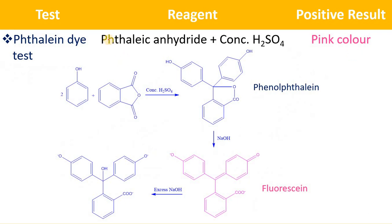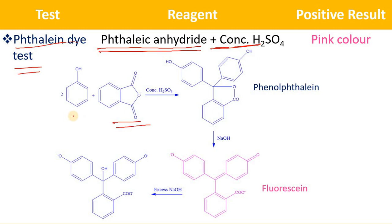You can also identify phenol by using the thaline dye test. The reagent is phthalic anhydride, which is an anhydride of phthalic acid, along with concentrated H2SO4. In this test, 1 mole of phthalic anhydride reacts with 2 moles of phenol. At the para position, hydrogen is eliminated in the form of water — one hydrogen from the first phenol and one from the second phenol, and the oxygen is also removed. There is a condensation reaction between 2 moles of phenol and 1 mole of phthalic anhydride, and you will get phenolphthalein indicator.